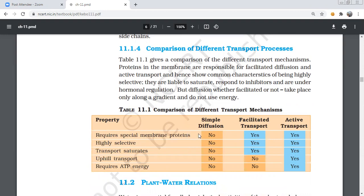Special membrane proteins: simple diffusion doesn't need them, but facilitated and active do. Highly selective: simple diffusion is not highly selective, facilitated is highly selective, and active transport is very selective.